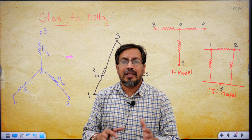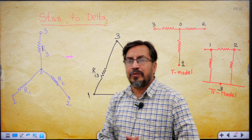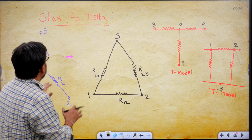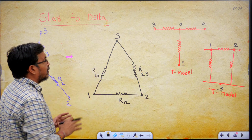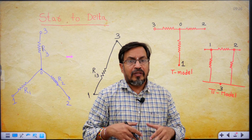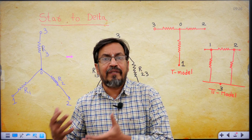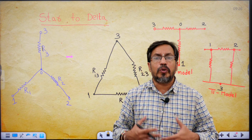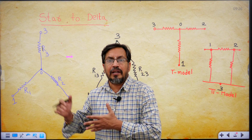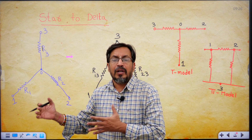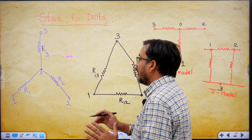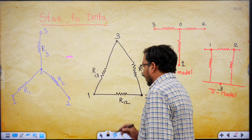Similarly, how is a delta network converted into a star network? Let's discuss this here. Star to delta: the input is the star network and we are converting the given star network into its equivalent delta network. The inputs are R1, R2, R3.